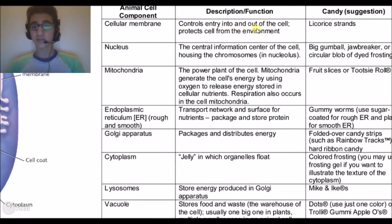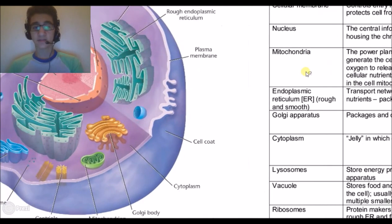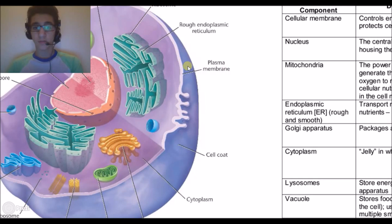In the animal cell it has a cellular membrane that controls entry into and out of the cell and protects the cell from the environment. This is the cellular membrane right here.